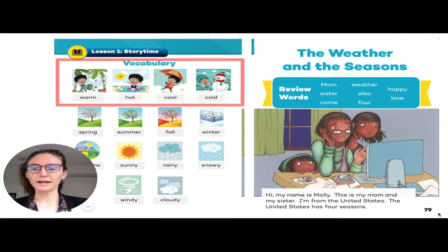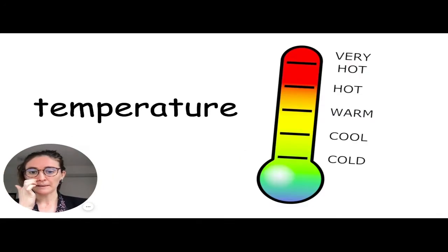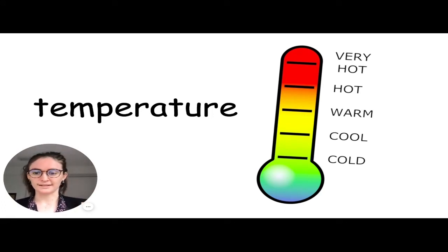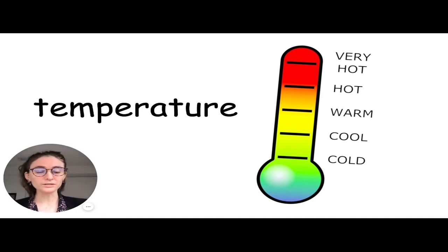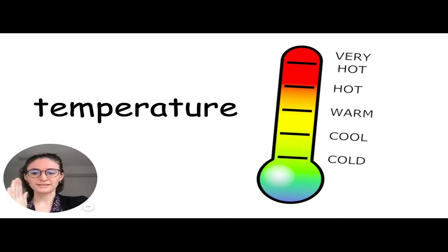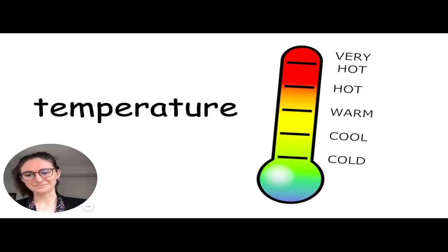The first group we're going to look at is temperature, class 102. Temperature is how the air feels on our skin. So how does it feel? You can feel cold, cool, warm, hot, or very hot. You can see it goes progressively from the coldest to very, very hot. So that's temperature.